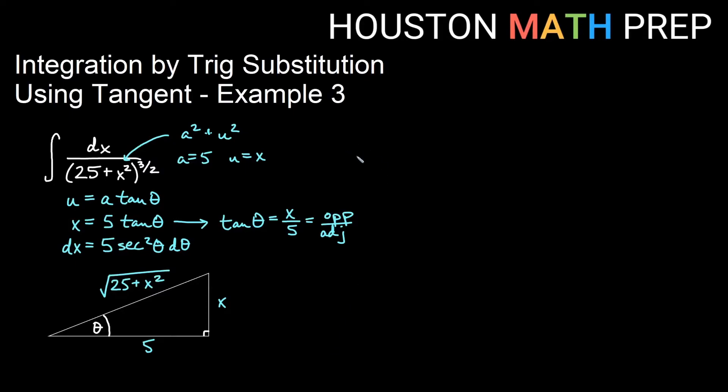We're good to now sub everything in terms of theta. So our dx on the top will be 5 secant squared theta d theta.